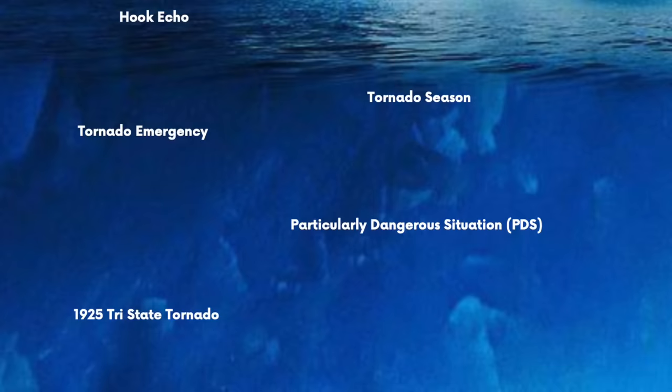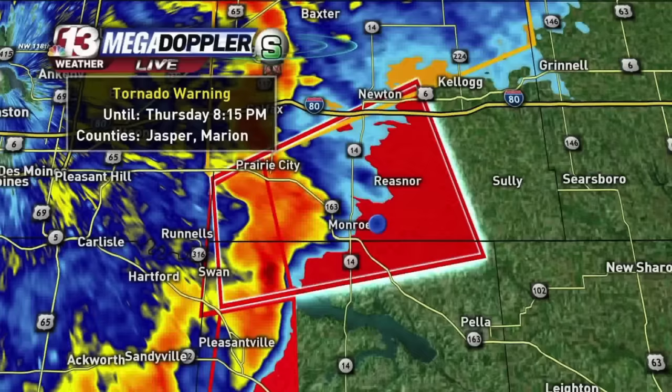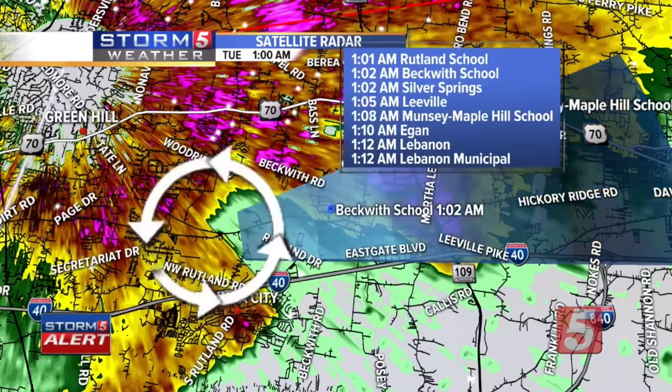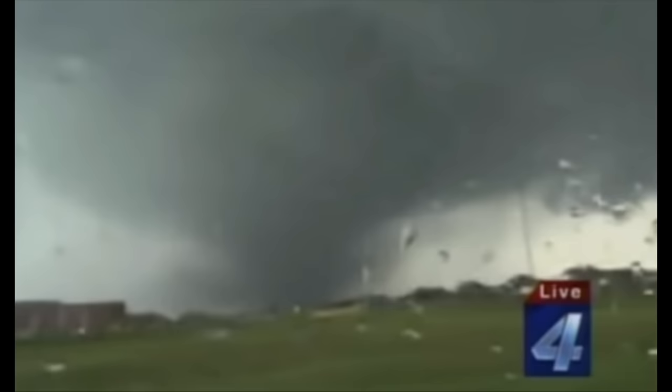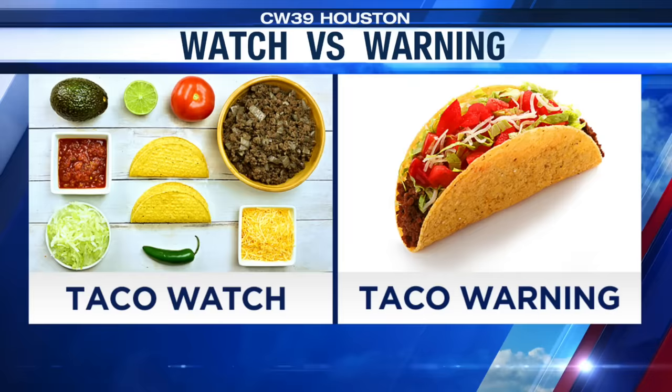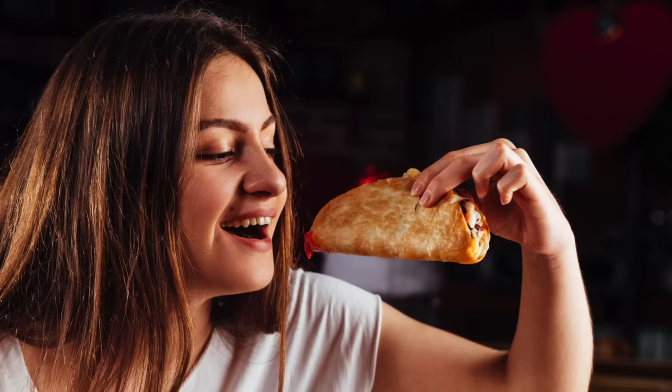Tornado Emergency. A tornado warning means there's a confirmed tornado heading in a general direction. A tornado emergency is one step further — there's definitely a strong tornado on the ground heading towards a populated area. They're pretty rare; the first one ever was during the 1999 Bridge Creek Moore tornado. Going back to the taco meme: tornado watch has the ingredients, tornado warning has a taco, and a tornado emergency has someone eating the taco.